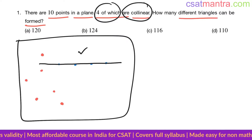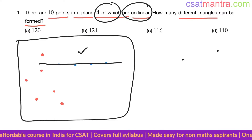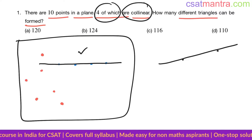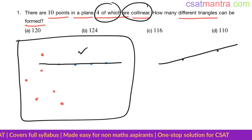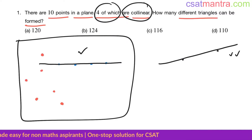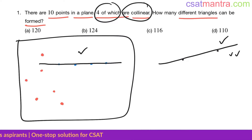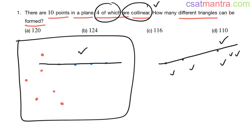Collinear means they are on the same line. Joining any two points, you can always draw a straight line — there is no problem with that. However, if a third point is also on the same line, then we call these three points collinear.